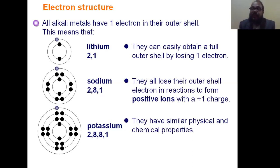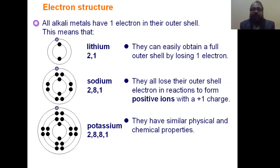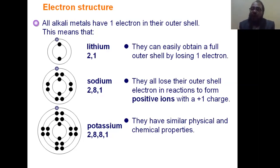These elements have the same number of valence electrons, that is why they have similar physical and chemical properties. They form basic compounds, they are highly electropositive, they have low ionization potential, and they have low electronegativity.